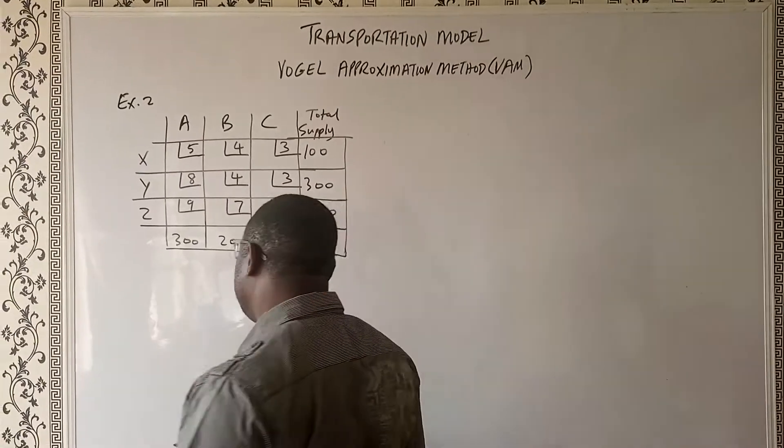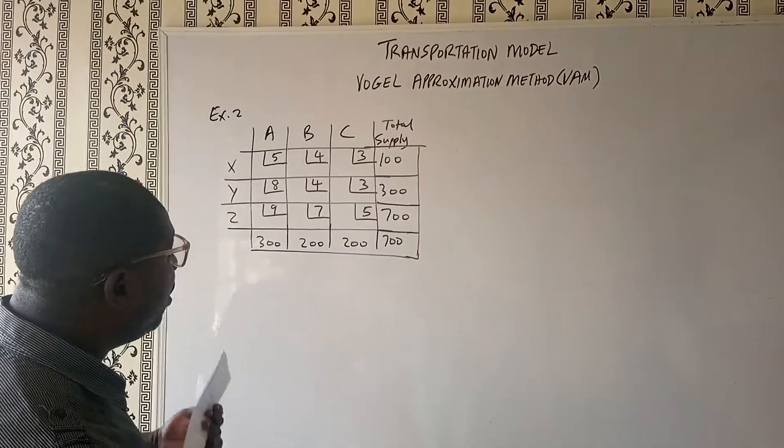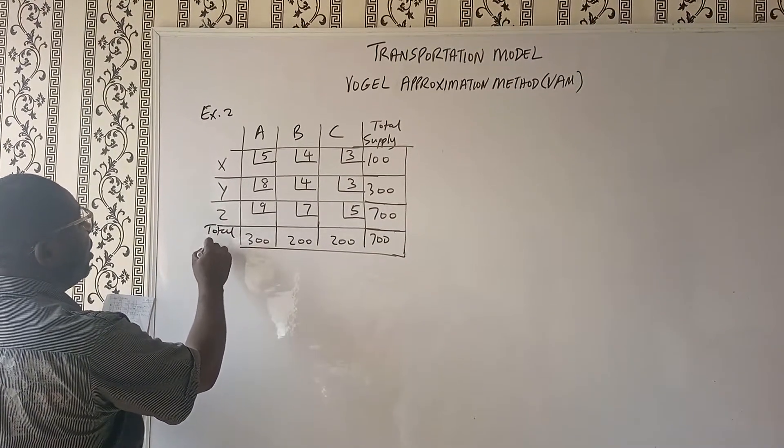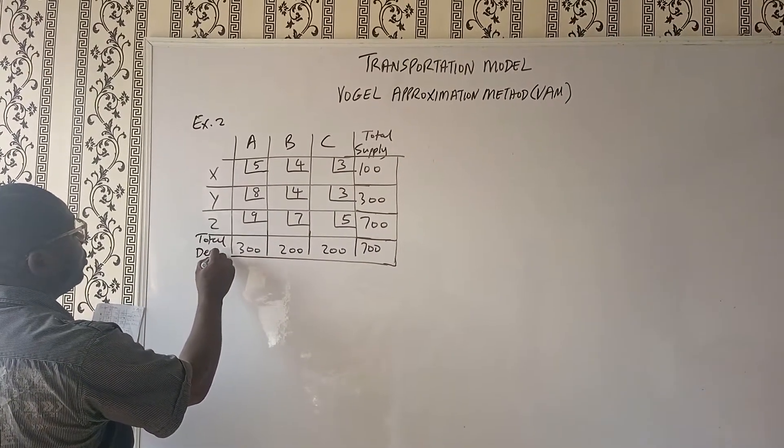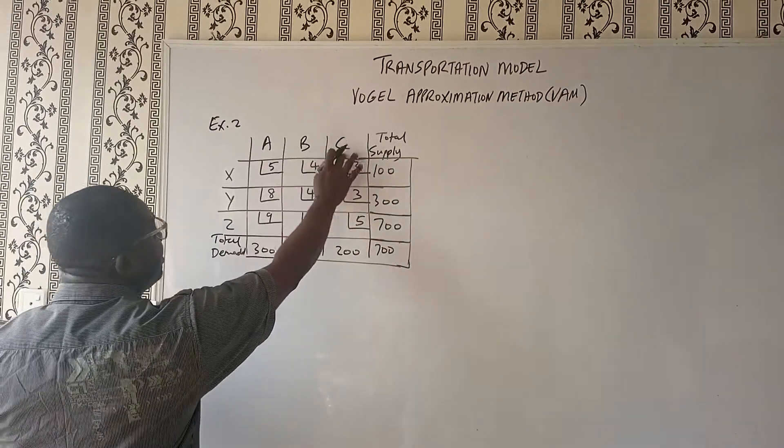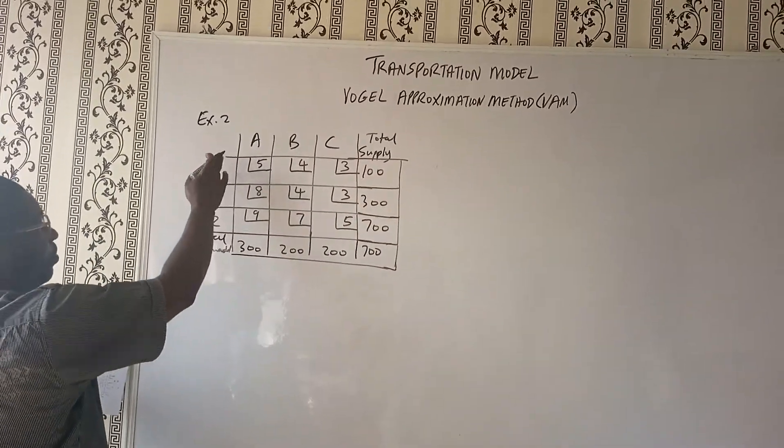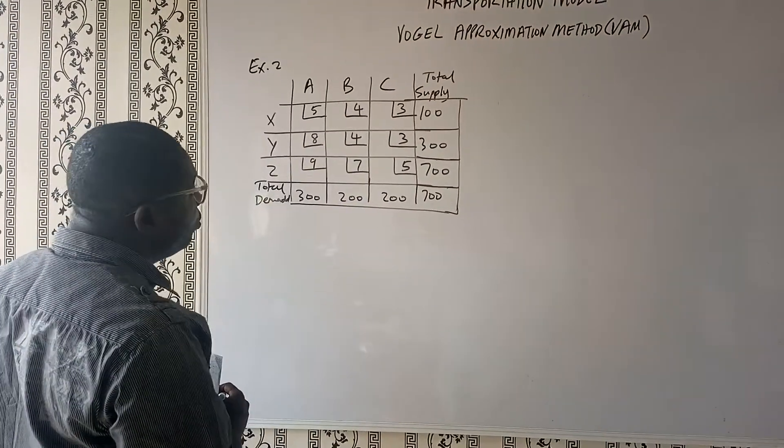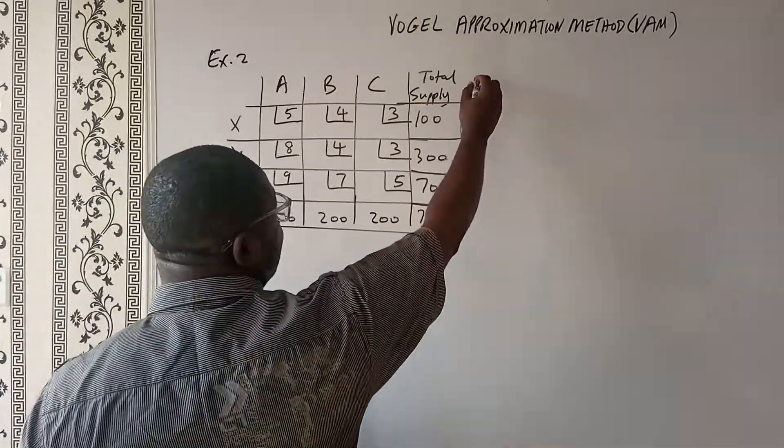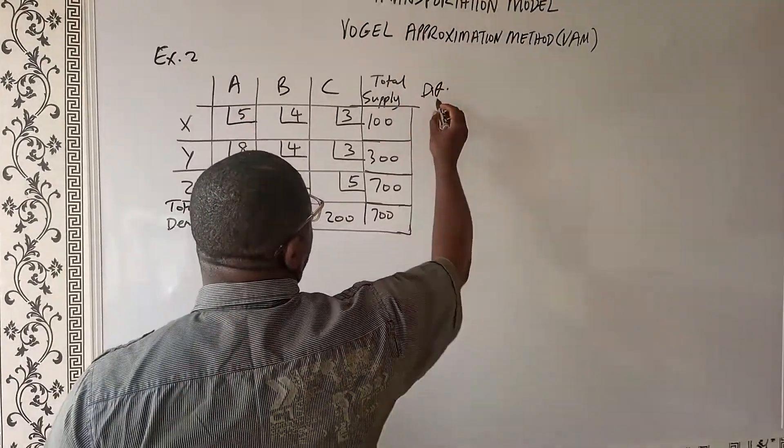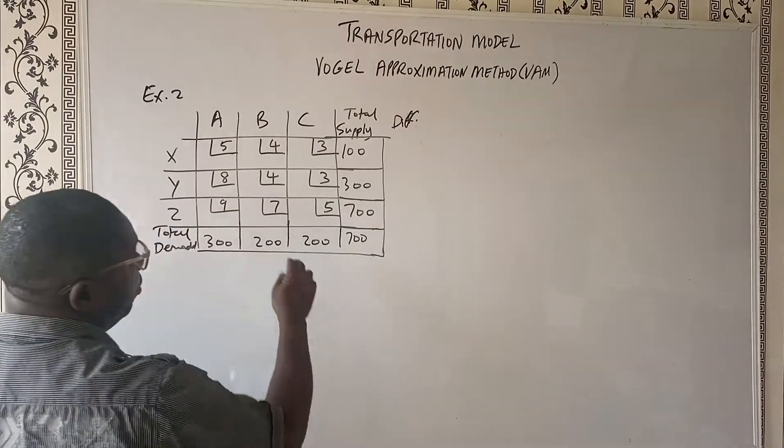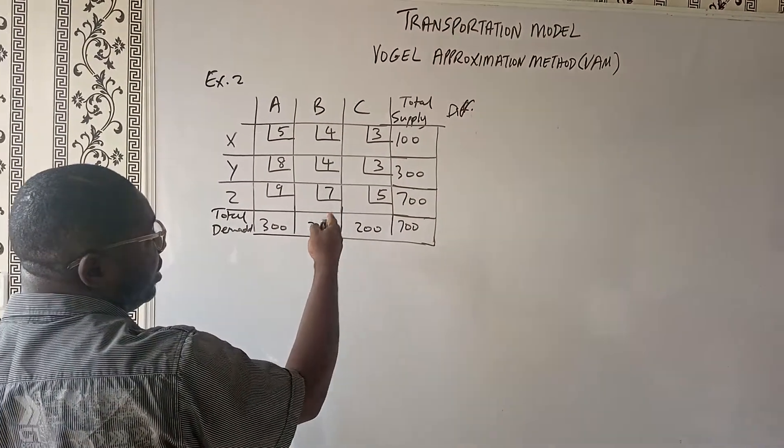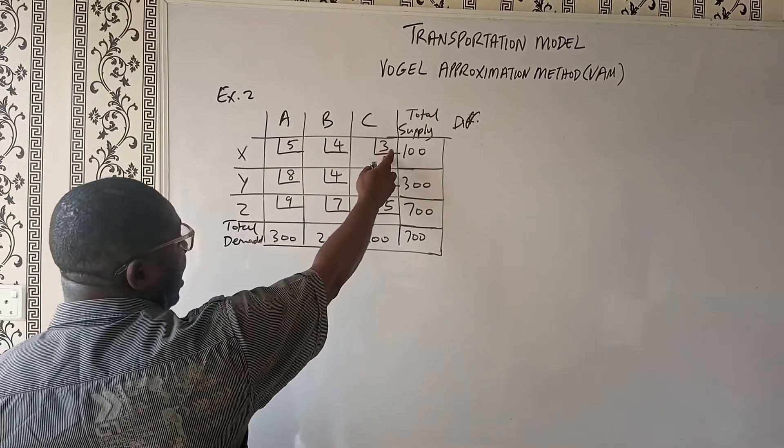On the board we have an example and here will be total of demand. The demand are A, B, C. Remember, supplies are X, Y, and Z. Now what we'll do is I will find the difference. That's the first thing we'll do. The difference in the costs for each row and each column. And the difference we're talking about is the least and the next least one. So in this case, this is 4 minus 3. That gives us 1.